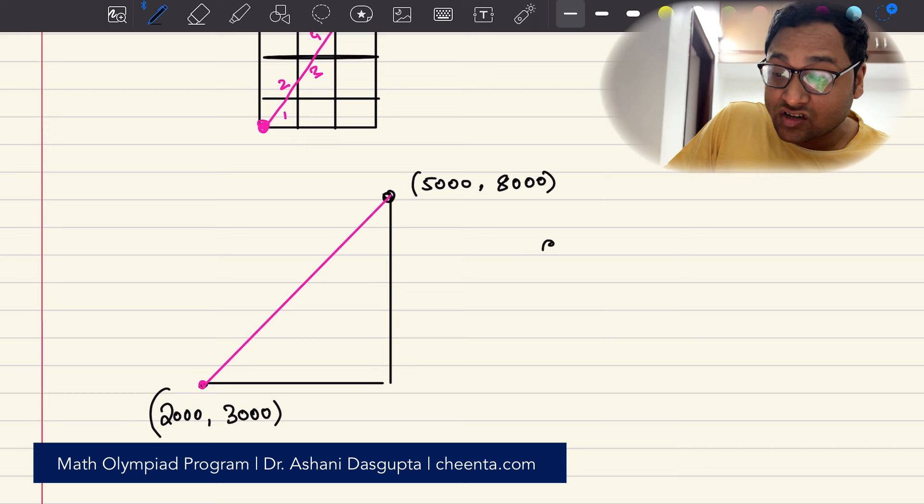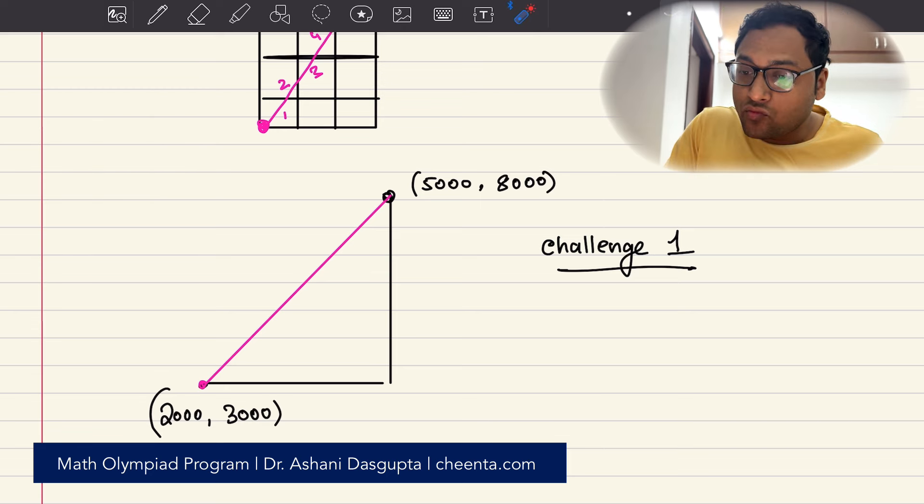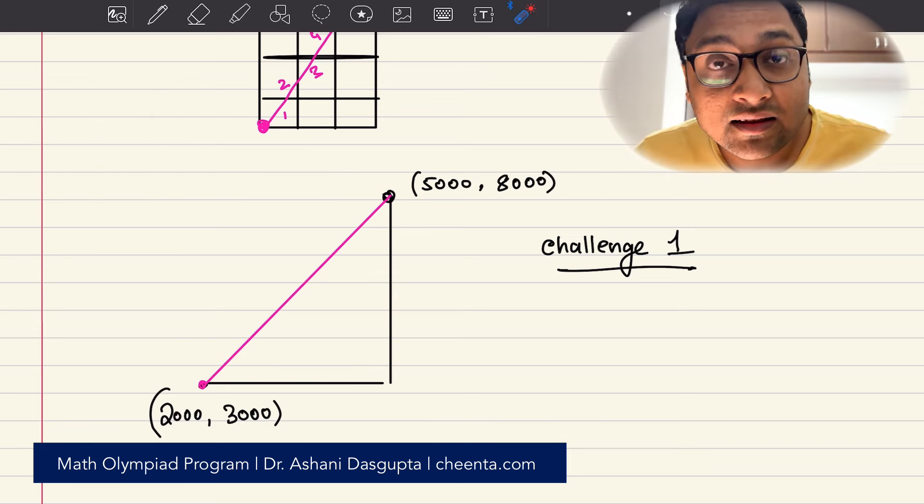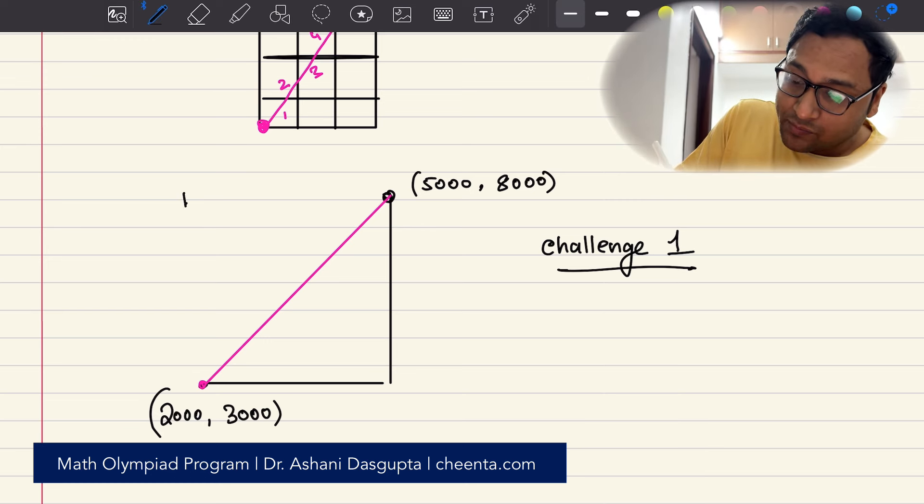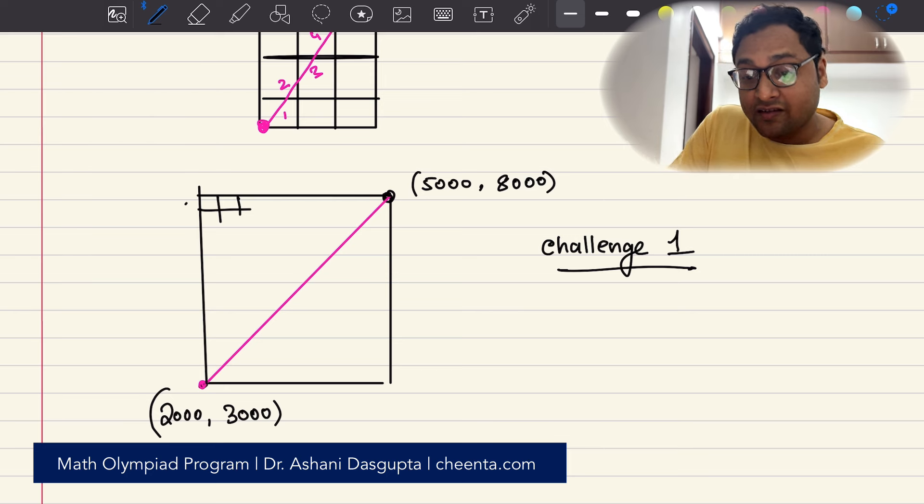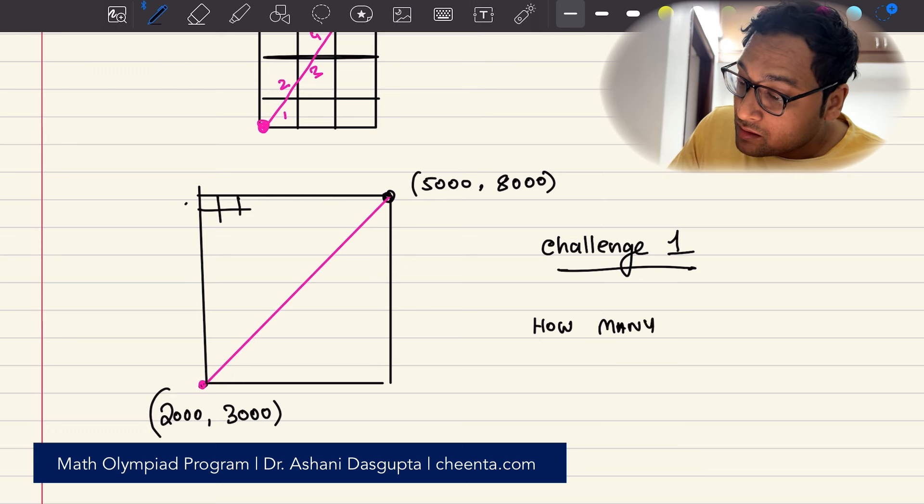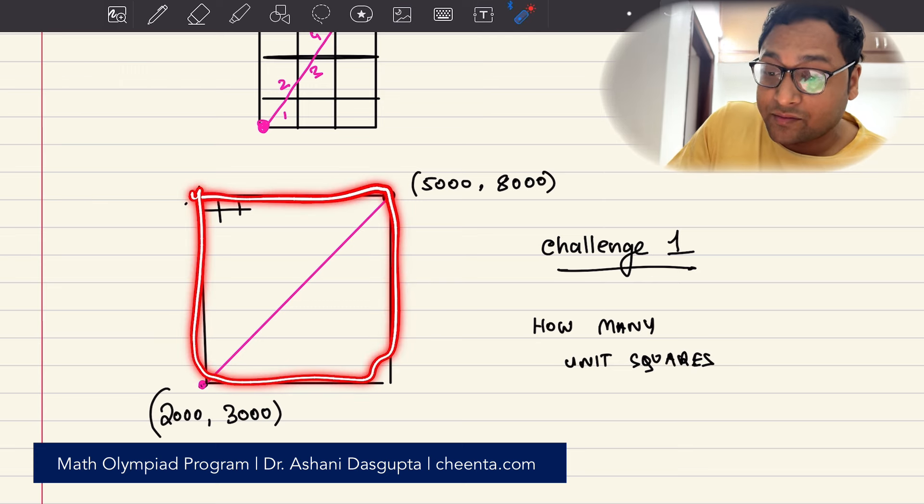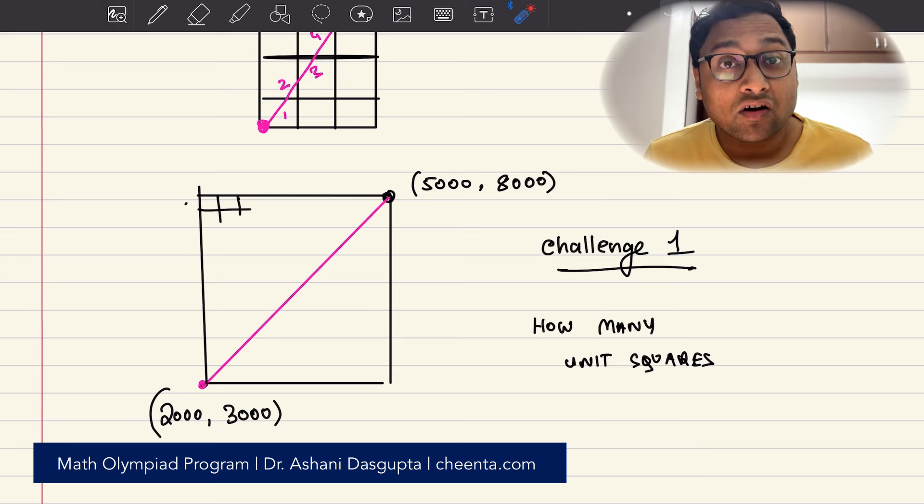In fact, let me ask you a challenge question. This challenge one is very easy. Even if you want to draw this part of the coordinate plane, can you tell me how many unit squares are here in this particular part of the coordinate plane? This is the part we are looking at. You can solve this problem, put it in the comment section. It's actually very simple. You should be able to do it very quickly.